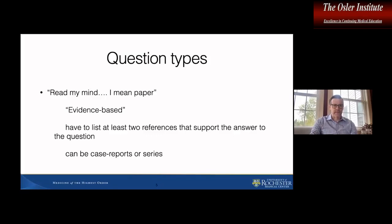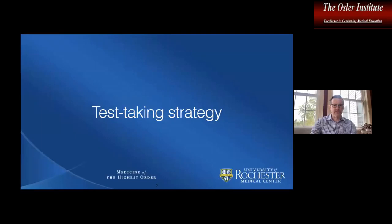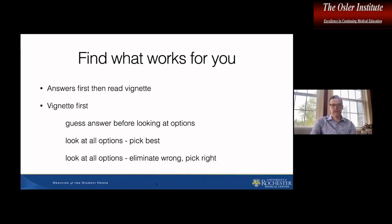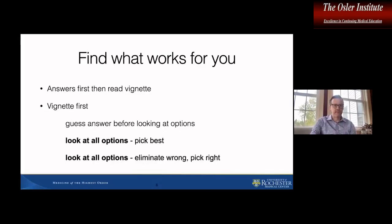Sometimes there's something you get wrong. In terms of strategy, the key thing is find what works for you. Especially for the hand surgery section, read the vignette — read every word of the vignette. Don't try to skip through. Some people like to look at the answers first and then read the vignette second. You can read the vignette, then guess the answer before looking at the options, or look at all the options and eliminate the wrong ones to pick the right one. The key thing is to read all the details of the vignette because the answer can change on one particular detail.